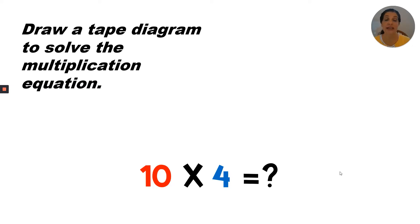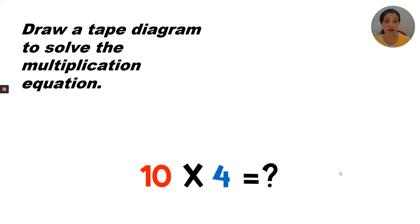A tape diagram is a math model that uses boxes to represent the number of groups. The multiplication expression is 10 times 4. We don't know the product, but we do know how many groups — that's the first number. Ten groups of four: we know there are four in each group, so we can draw ten rows of four.